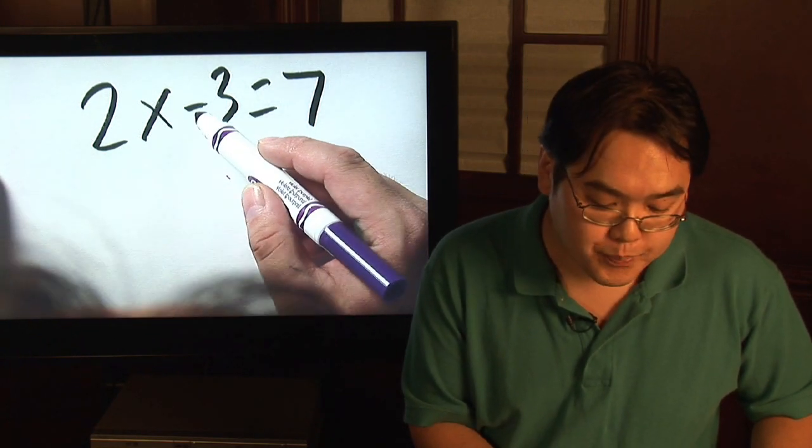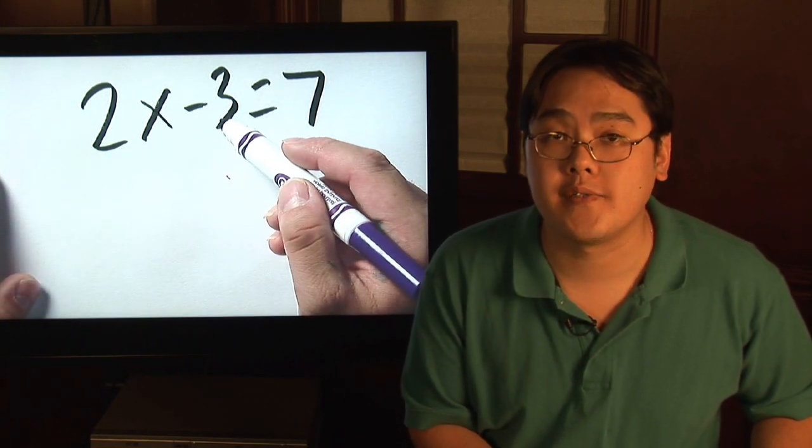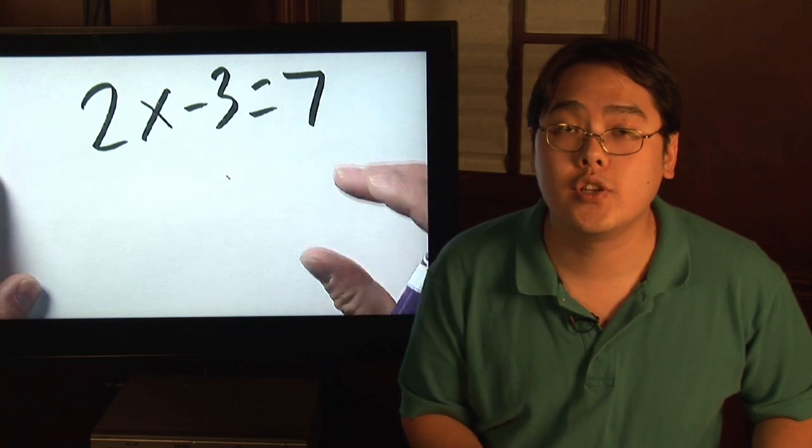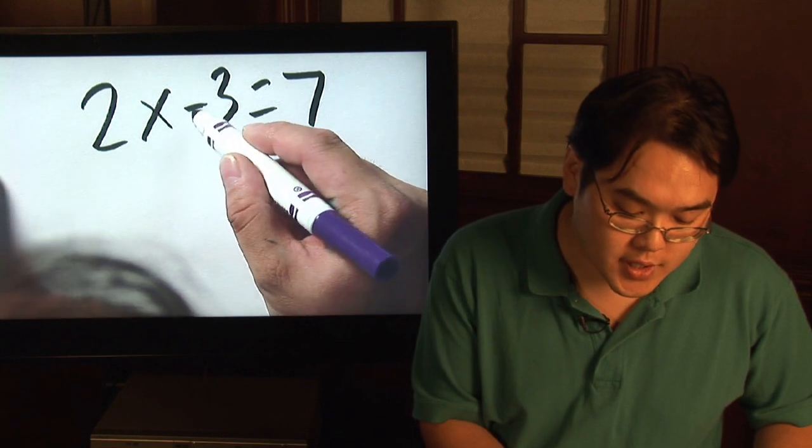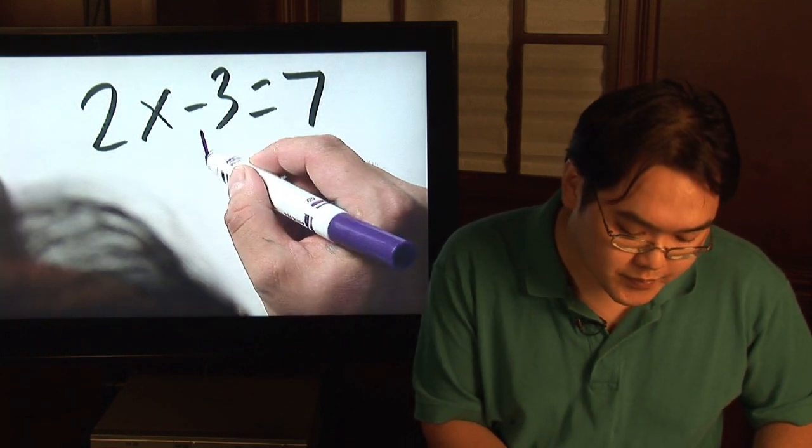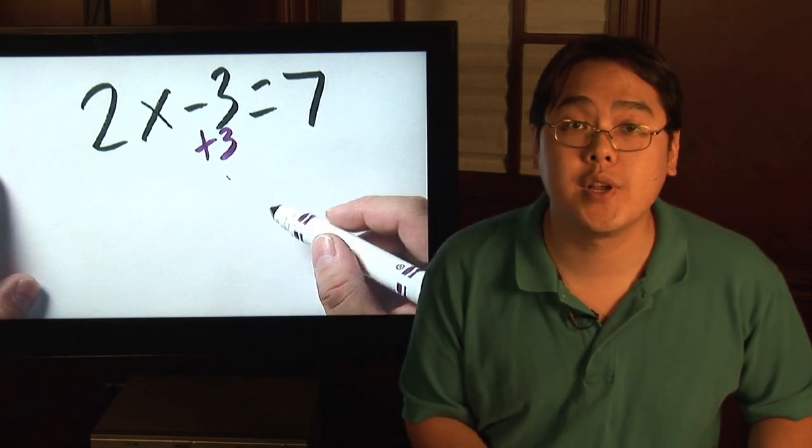So what you want to do is, because the number is subtracted by 3 on this left hand side, you want to go ahead and use the opposite operation to get rid of it. So in other words, since you're subtracting by 3, you want to add 3 to this side.